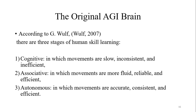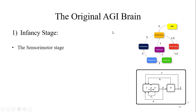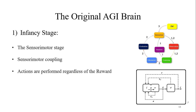The infancy stage of AGI Brain is equivalent to the sensorimotor stage of a human being. According to Jean Piaget's theory of child development, it is the first stage of the child's life, beginning at birth and lasting through age two. During this period, the child learns about the world by using their senses to interact with their surroundings — also called sensorimotor coupling, when the integration of the sensory system and motor system happens. In AGI Brain's infancy stage, actions are performed regardless of the reward; the artificial agent performs random actions to interact with the world, then observes the consequences and learns them.